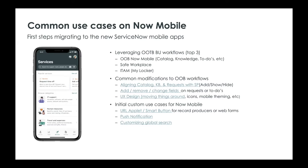The first step is understanding the baseline and what's available out of the box, then identifying what general employees need on mobile that isn't already covered. Common modifications include aligning your catalogs, KBs, and requests with the service portal experience, adding or changing fields and actions on your applets, and configuring icons, images, and in-app color theming so it better aligns with the service portal experience, giving you a seamless employee service portal experience whether on mobile or desktop.